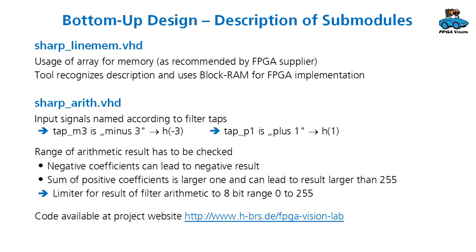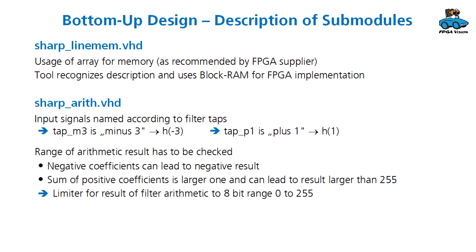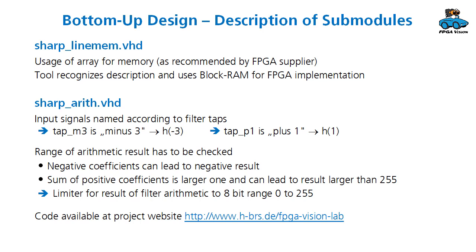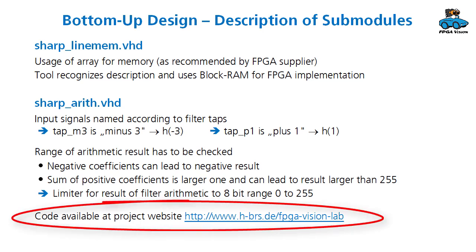For the arithmetic we have to consider that negative coefficients in the filter function can lead to negative results, and also the positive coefficients are in sum larger than 1. So there might be an overflow with results larger than 255, so a limiter is required. Please have a look at the code — it's available at our project website on the link you find here.